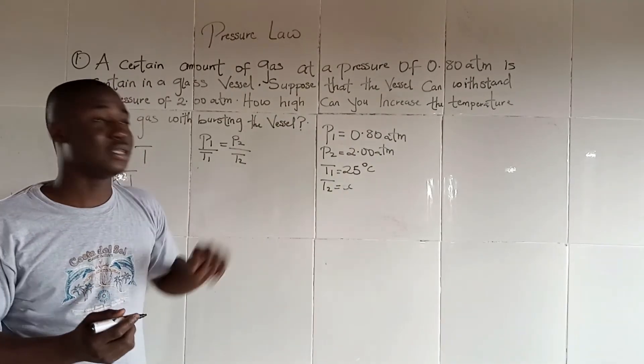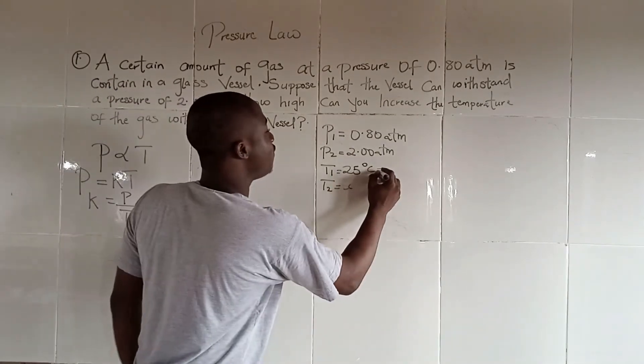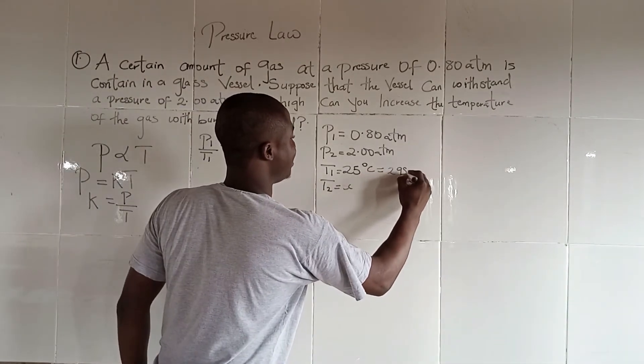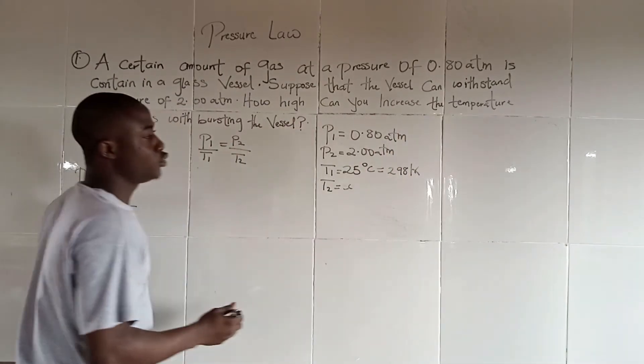By converting it to Kelvin by addition of 273, we get 298 Kelvin.